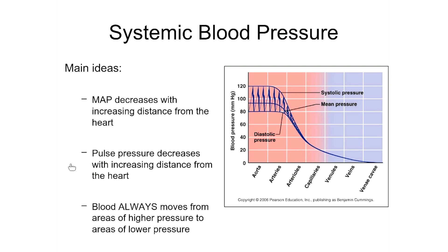When you take someone's pulse and feel a blood vessel expanding with each heartbeat, you're feeling the pulse pressure — the difference between systolic and diastolic pressure. You cannot take a pulse from a capillary or vein because they do not pulsate; there is no difference between systolic and diastolic pressure in those vessel types.